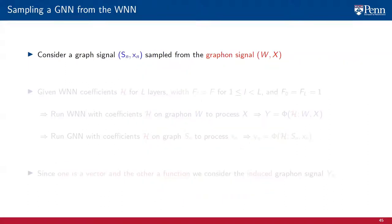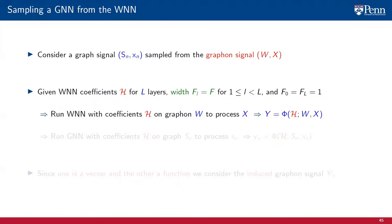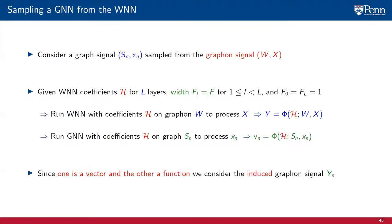Consider a graph signal S_N X_N sampled from the graphon signal WX. Let H be the set of coefficients of a graphon neural network with L layers and F features per layer, except for the input features F_0 and output features F_L, which are equal to 1. Run a WNN Y with coefficients H on the graphon W to process the graphon signal X. And from this WNN, instantiate a GNN Y_N with coefficients H on the graph S_N to process the graph signal X_N. We want to compare Y and Y_N, but this is not possible because the graphon signal X is a function and the graph signal X_N is a vector. To solve this problem, we consider the graphon signal Y_N, which is the graphon signal induced by the graph signal y_N.